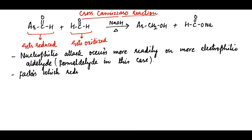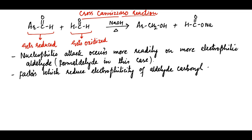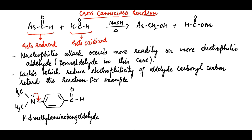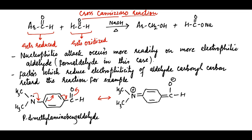Factors which reduce the electrophilicity of the aldehyde carbonyl carbon retard the reaction. For example, in the case of para-dimethylaminobenzaldehyde, the mesomeric electron donation by nitrogen reduces the electrophilicity of the aldehyde carbonyl carbon. Thus this molecule does not undergo the Cannizzaro reaction.